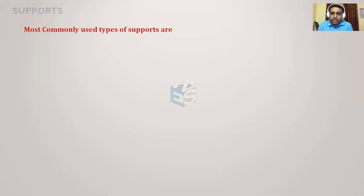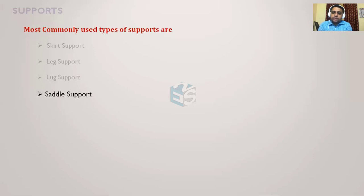The most commonly used types of supports we are going to discuss are skirt support, leg support, lug support, and saddle support. These are the various types of supports we will discuss one by one, including their important features and when to use which kind of support.